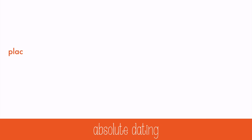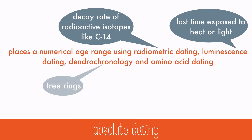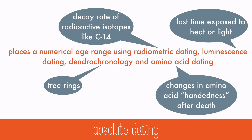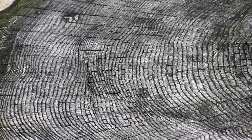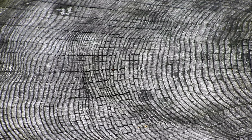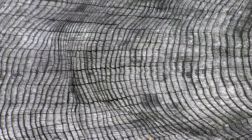Absolute dating places a numerical age range using radiometric dating, luminescence dating, dendrochronology, and amino acid dating. Some scientists prefer not to call it absolute, but chronometric or calendar dating instead, because the word absolute makes it sound much more certain and precise than it really is. It's still an estimation, like the relative dating of rocks based on the law of superposition, but it has a number to it. For example, in dendrochronology, scientists count the rings in a tree to estimate the number of years that have gone by. Differences in growth through the seasons create a ring, and it generally takes one year, but there can be some variation.